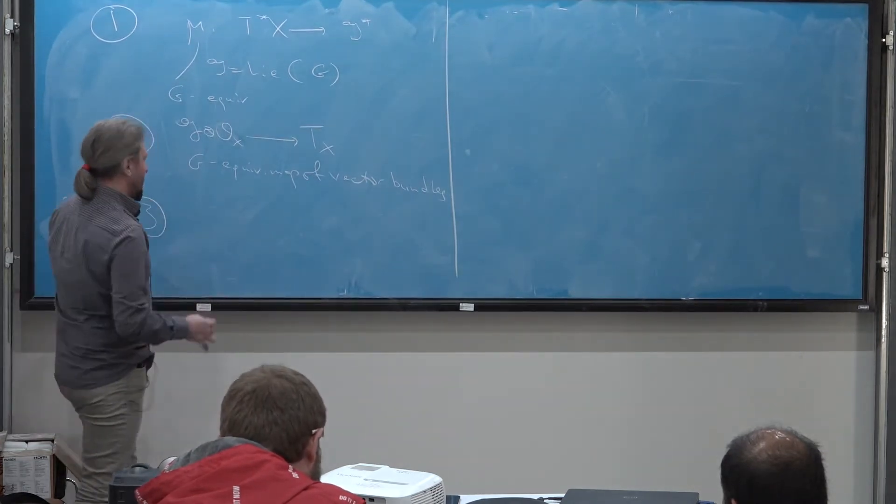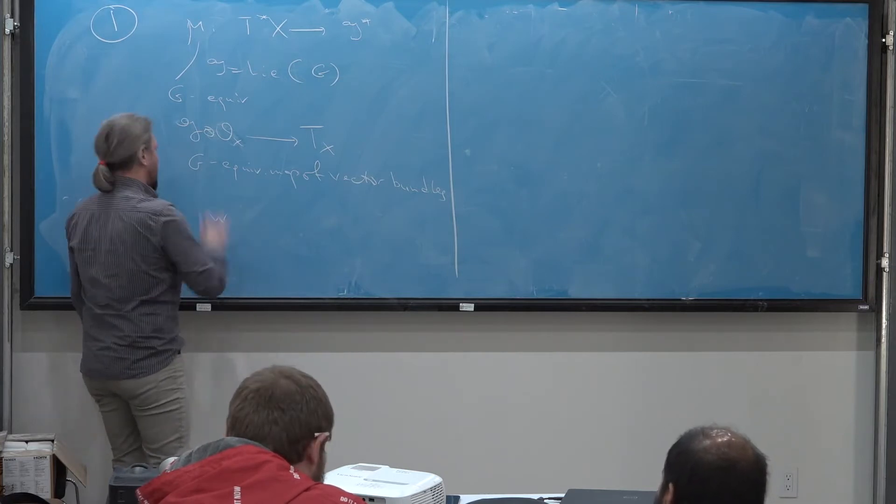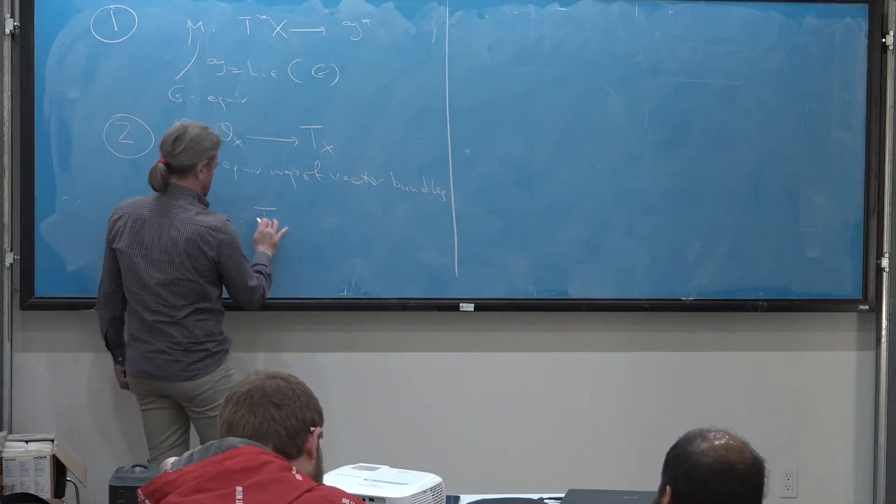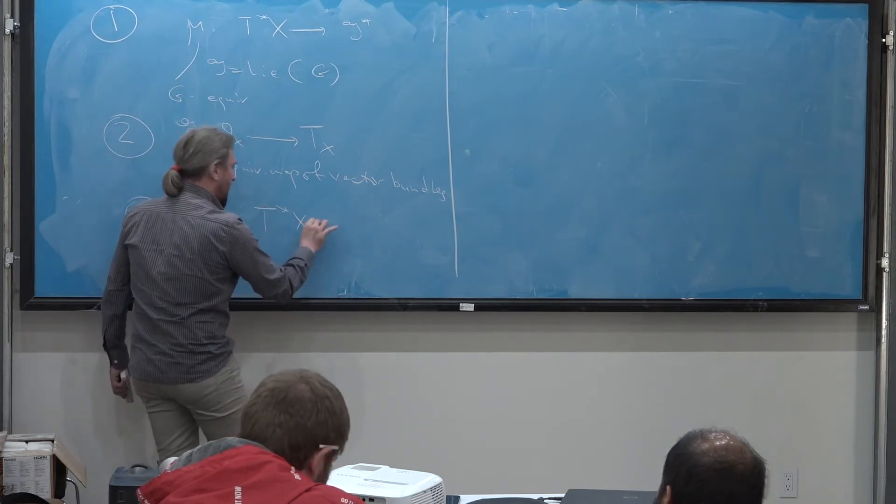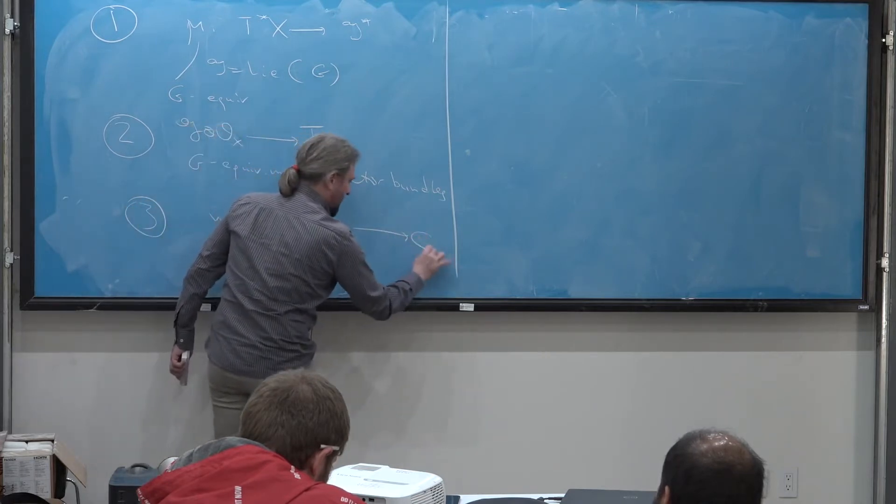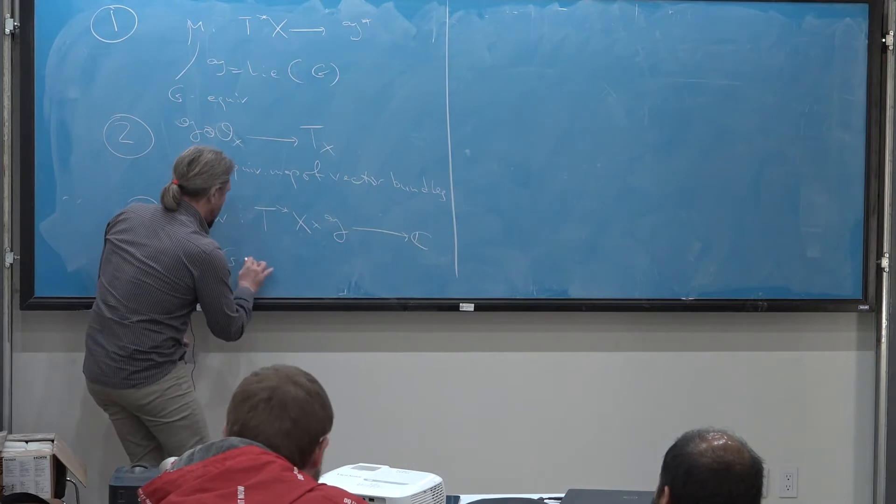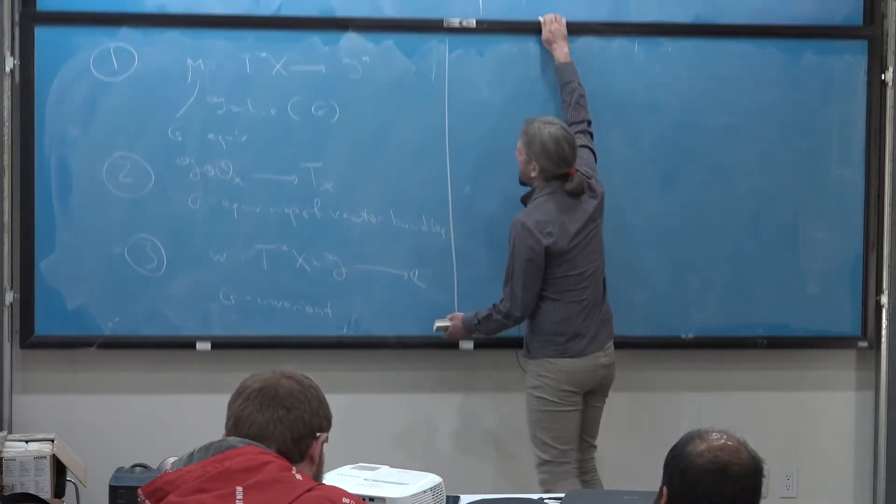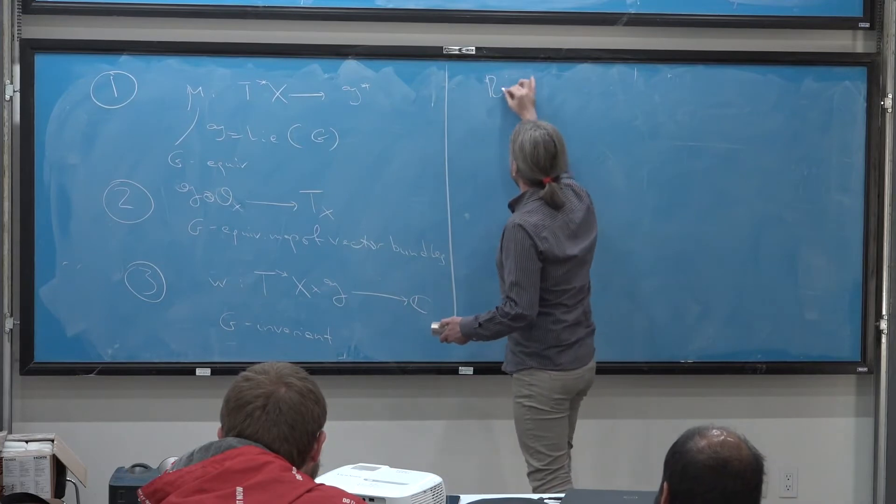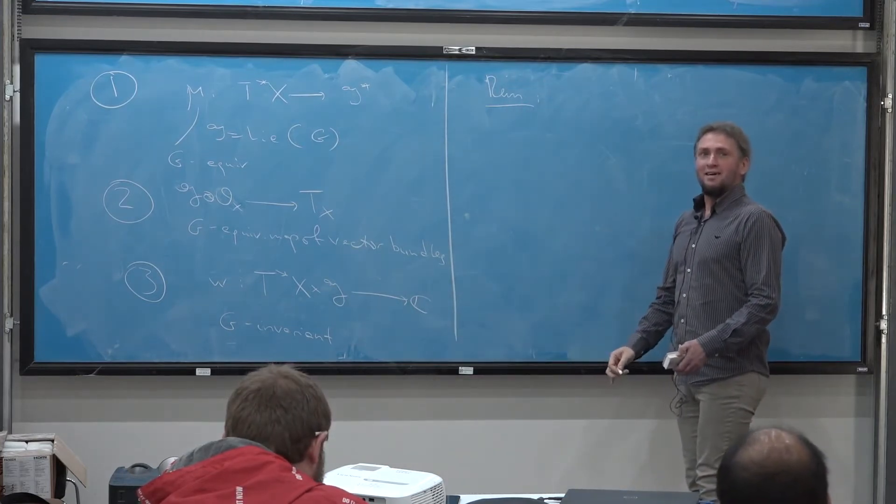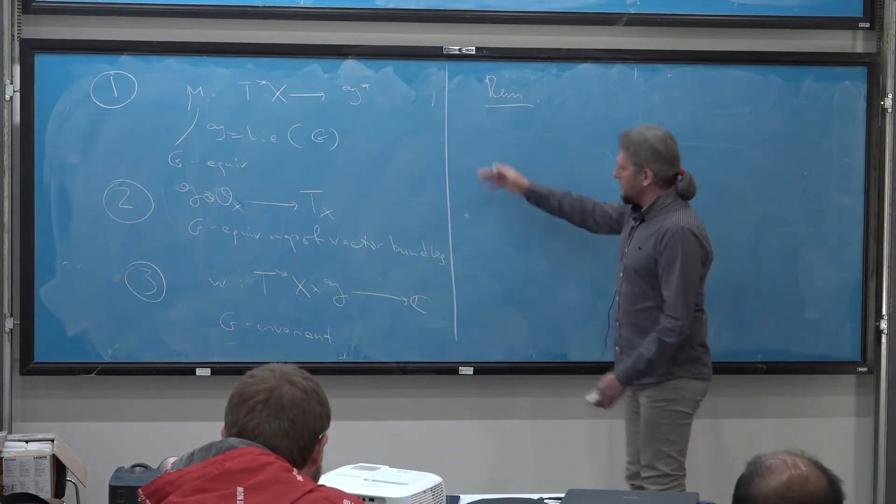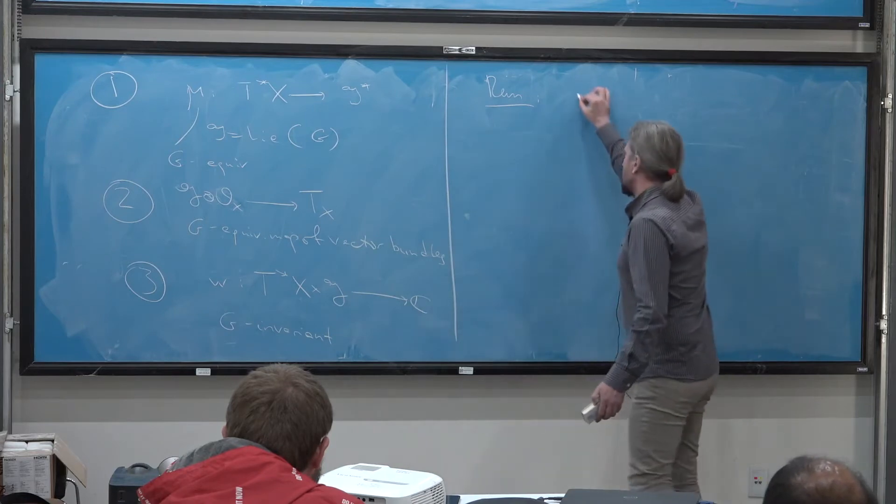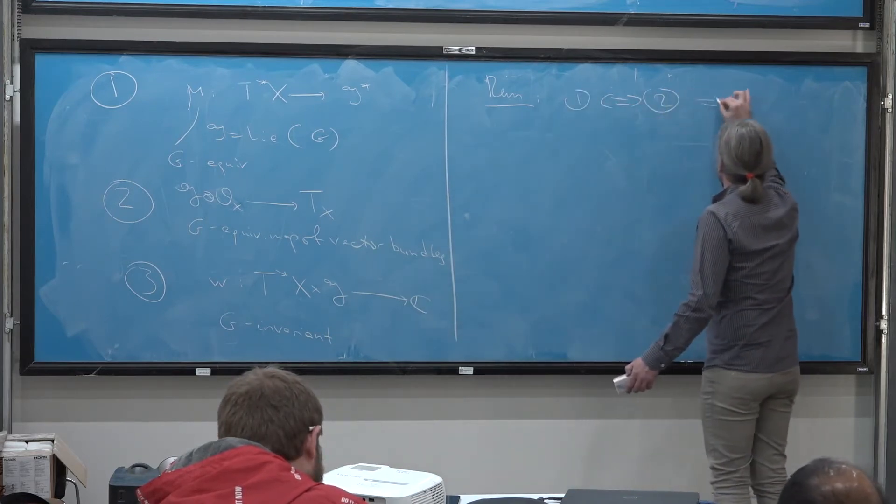And third incarnation is, I mean, all of them are equivalent. Third incarnation is a certain function, which for some reason I'll denote by W. It's a global function on the product of T star X and G with values in C. And again, this function is G invariant. And the remark is that for those who know one of these definitions, it's very easy to pass from language one to language two to language three. So just one is equivalent to two is equivalent to three.